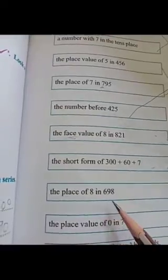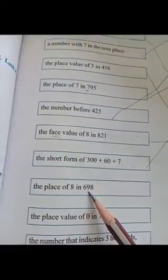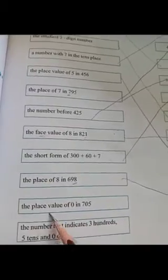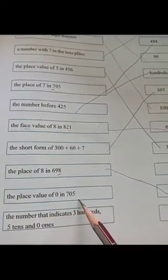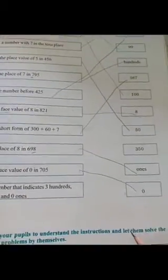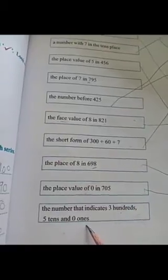The place of eight in six hundred and ninety-eight — eight is in the ones place. The place value of zero in seven hundred and five — zero's place value is zero. The number that indicates three in hundreds, five in tens, zero in ones — the number is three hundred and fifty.